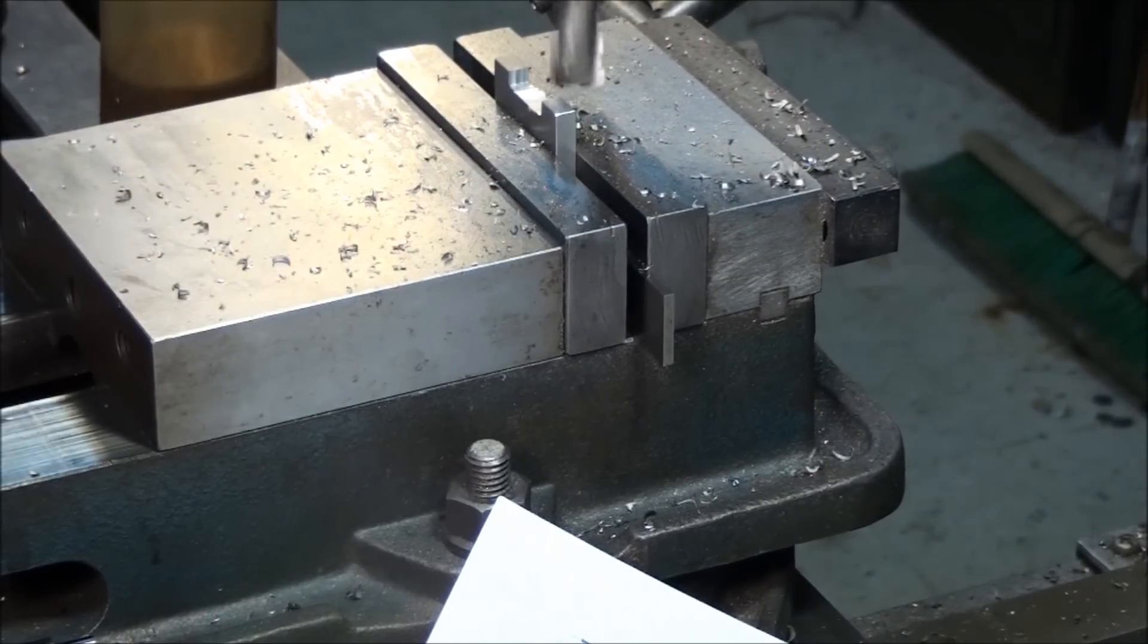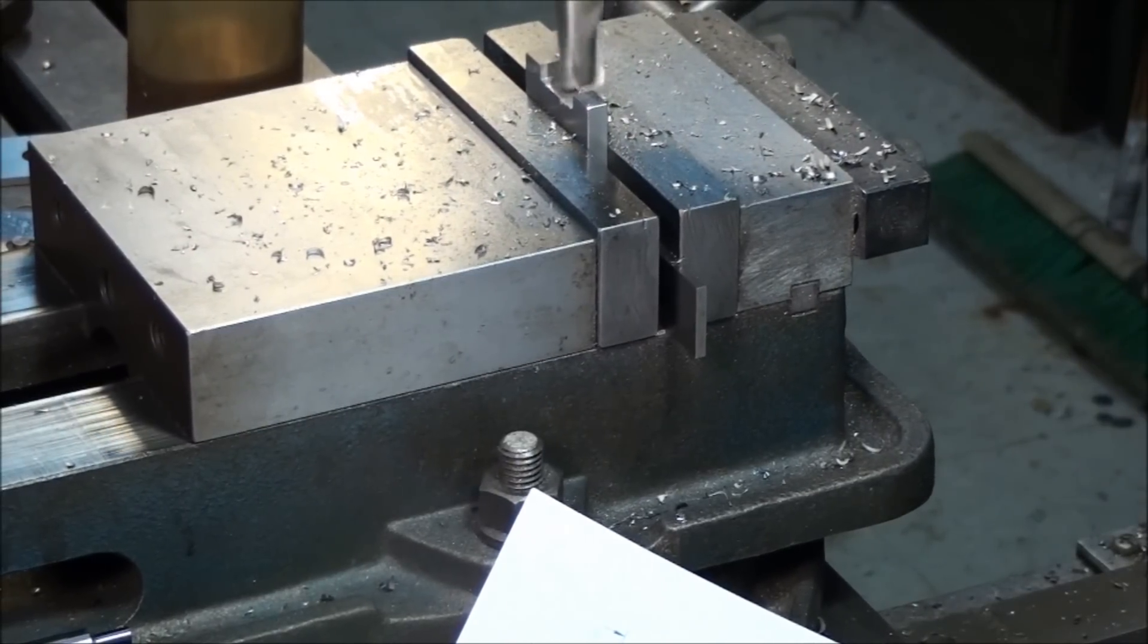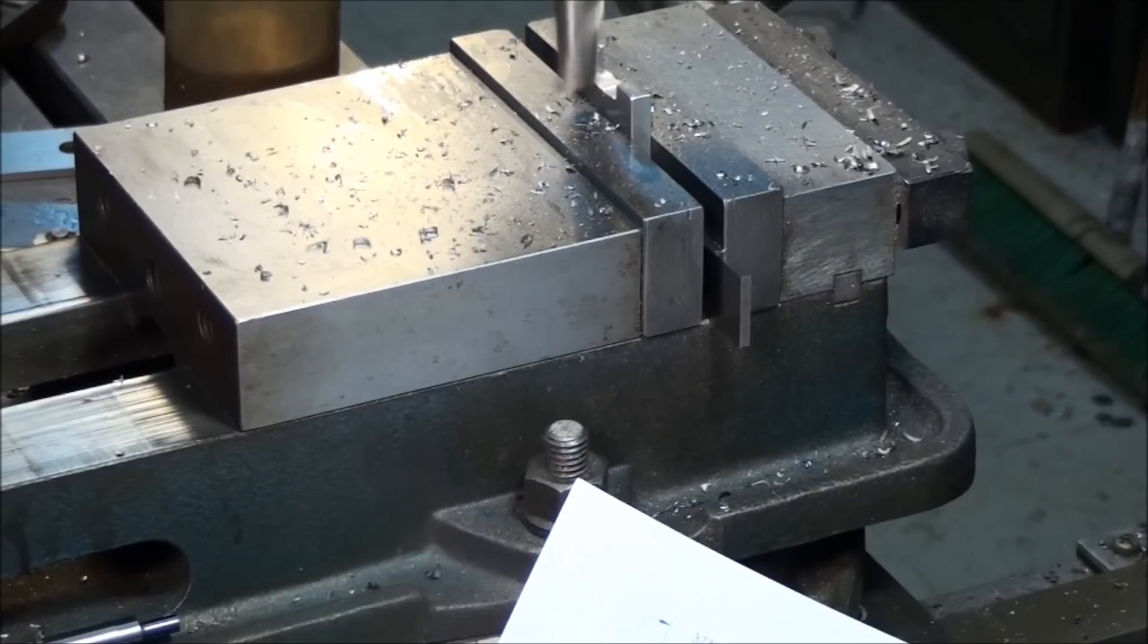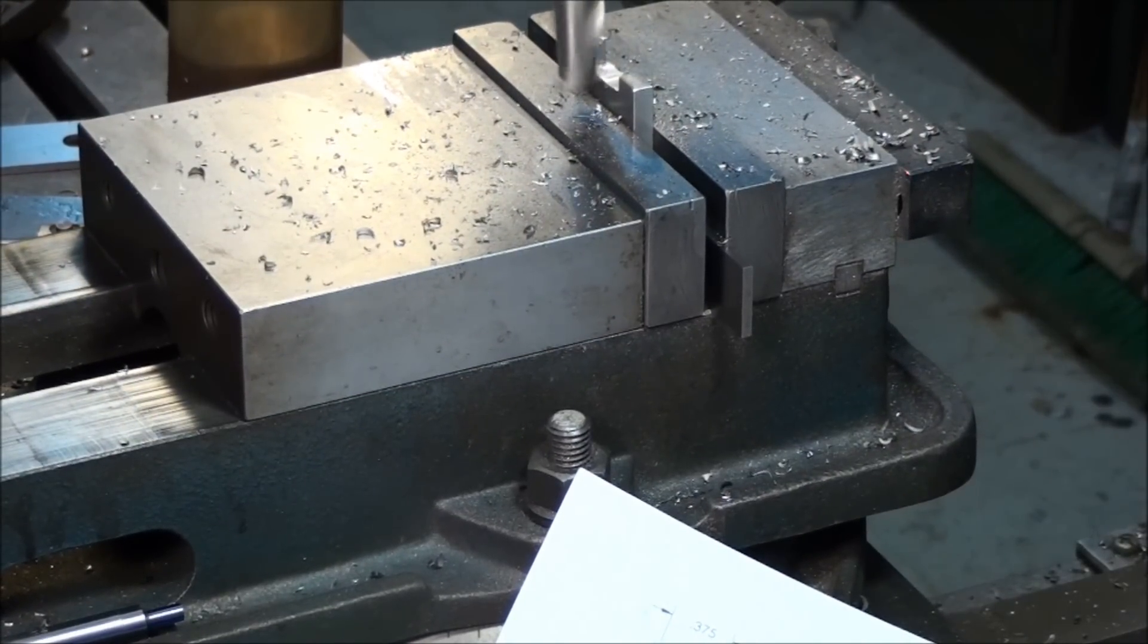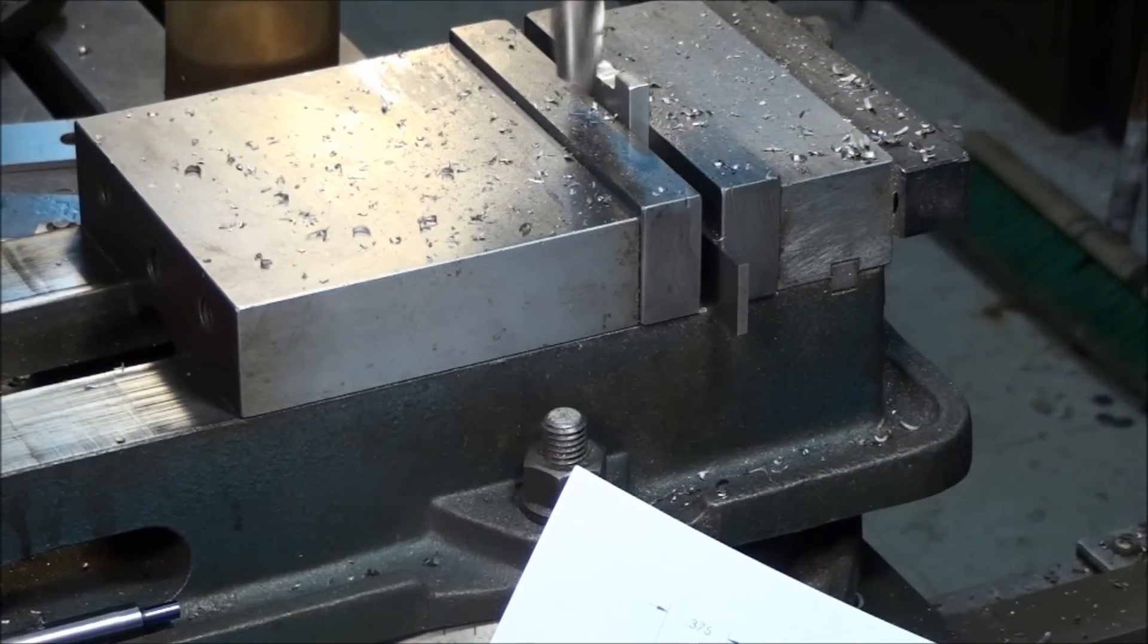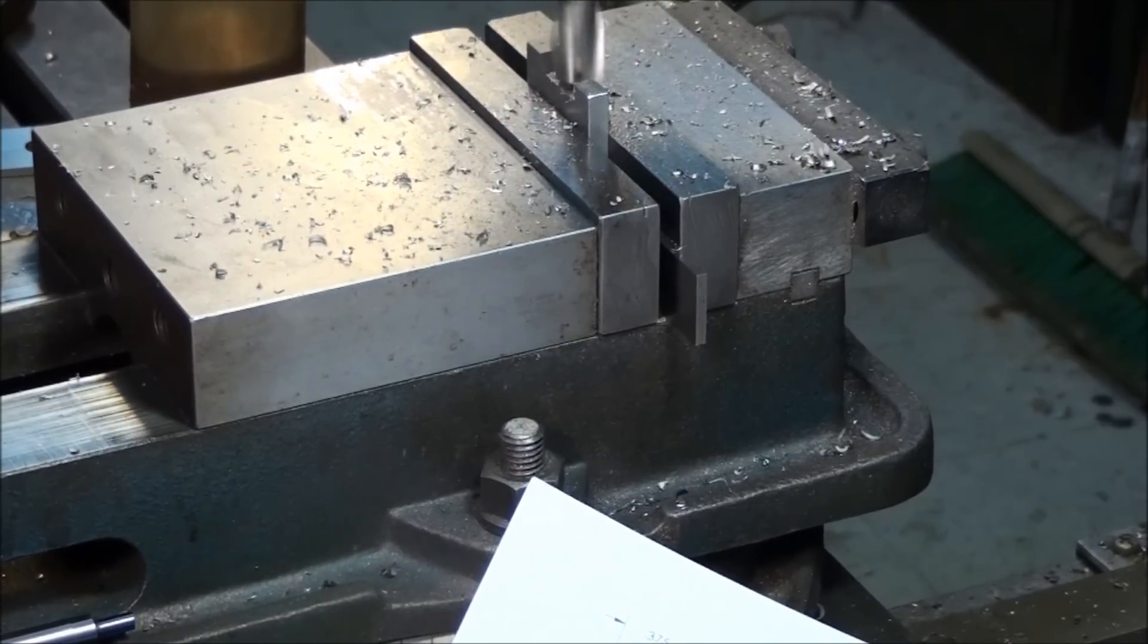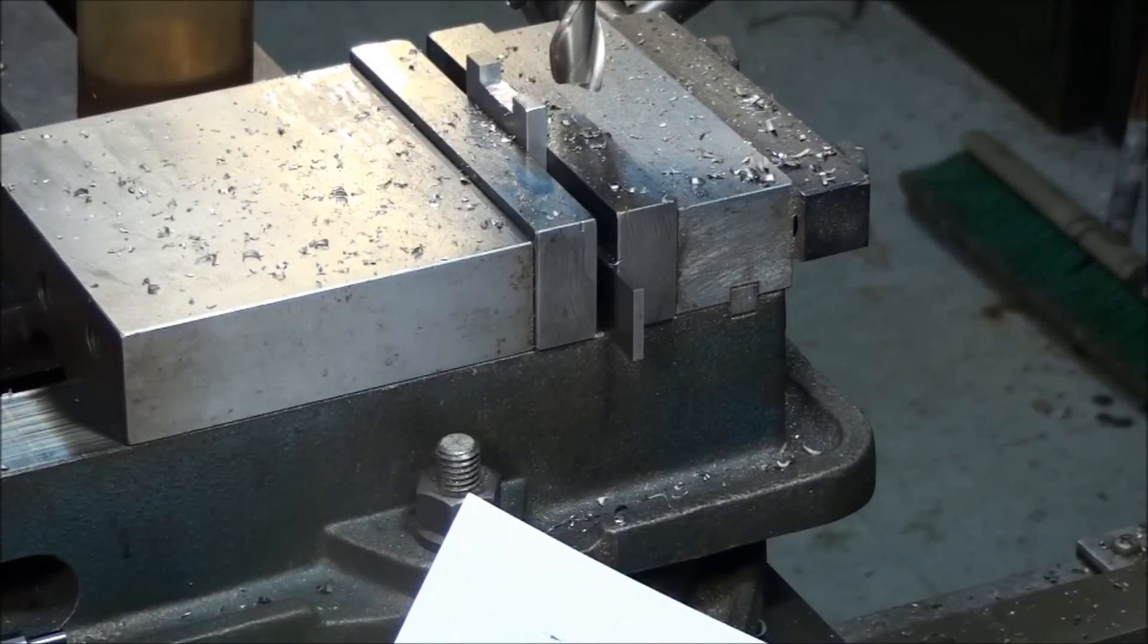I'm going to do this other side first. I'm going to climb mill it, and I can do that on here. If you're using a light mill or something like that, be really careful with climb milling. Now drag the locks on your table so nothing can grab and get pulled into the cutter. Okay, 125 the other direction. And that part is done.